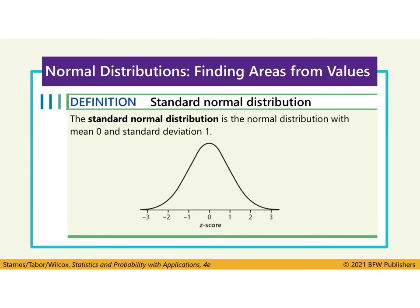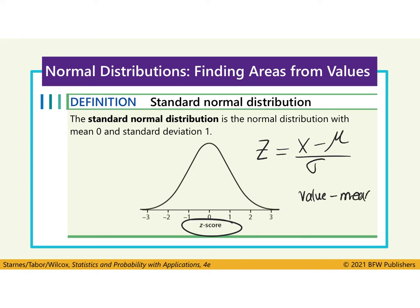We are looking at the standard normal distribution — the normal model with a mean of 0 and one standard deviation above and below the mean. The standard normal distribution uses Z-scores, which we calculated at the beginning of the chapter. We are always going to calculate a value's Z-score, standardize the value, and then calculate the probability or proportion that is greater than, less than, or between two values. Z equals X minus mu divided by sigma — that's the value minus the mean divided by the standard deviation — the number of standard deviations from the mean a value is.